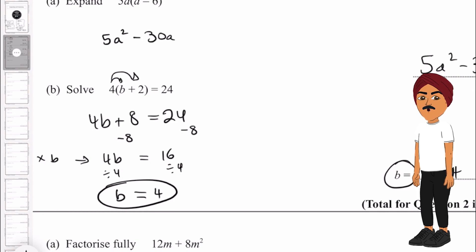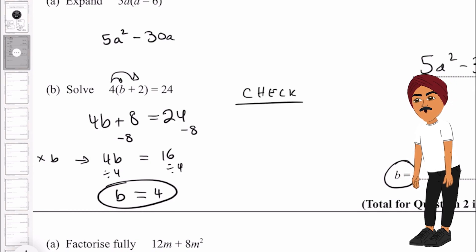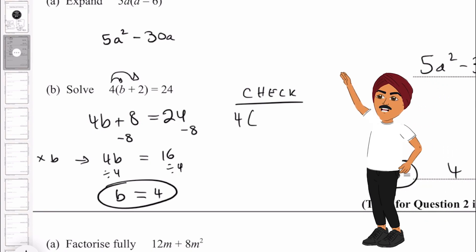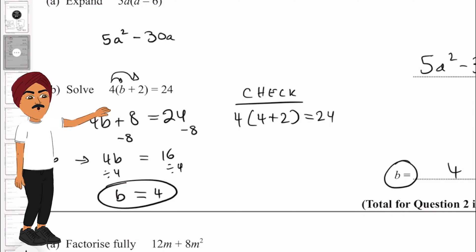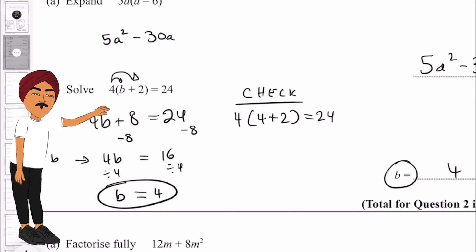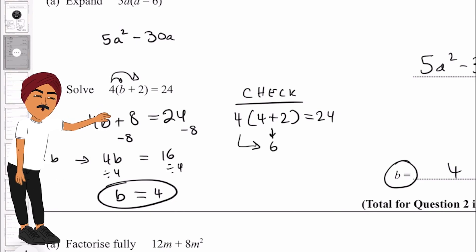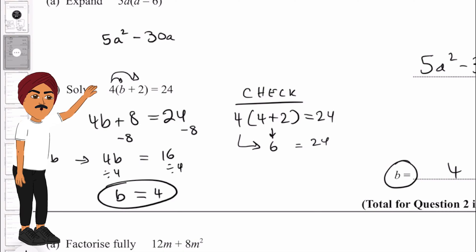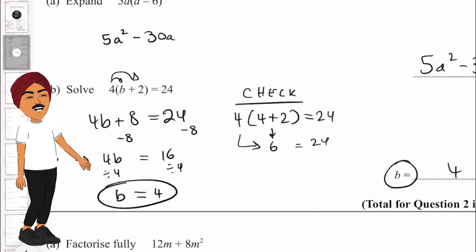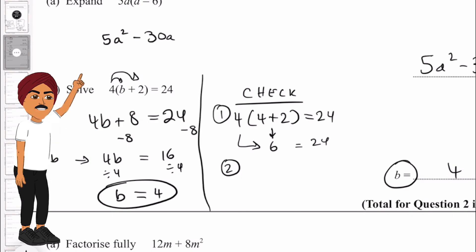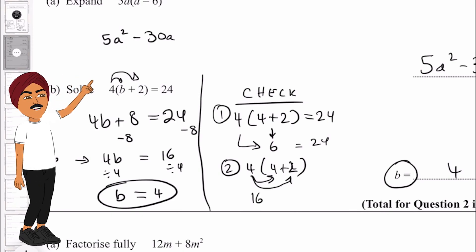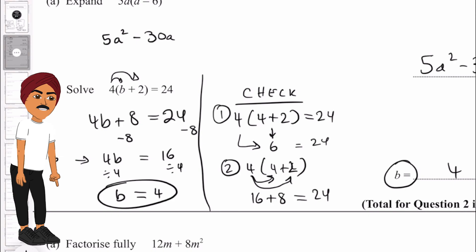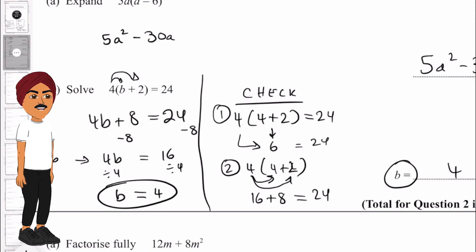A good way to check this is to substitute our value back in. We have 4(b + 2) = 24, and now b equals 4, so 4(4 + 2) = 24. Using method 1: 4 + 2 equals 6, times 4 gives 24. Or using method 2: 4 times 4 is 16 and 4 times 2 is 8, still giving 24. Both methods confirm our answer.